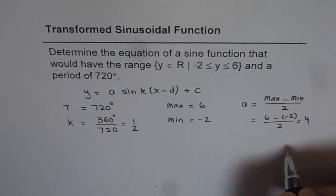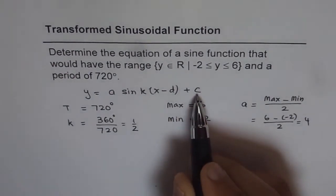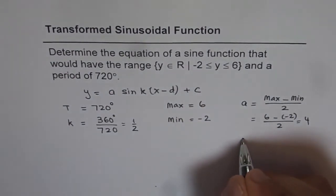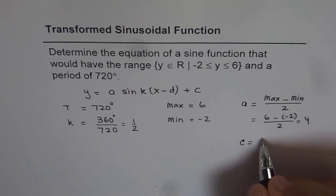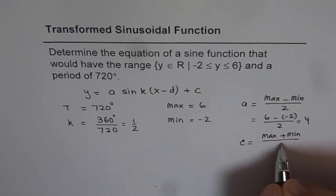So amplitude is 4 for us. Axis, which is c, is the average value of maximum and minimum. So we'll add them and then divide by 2.